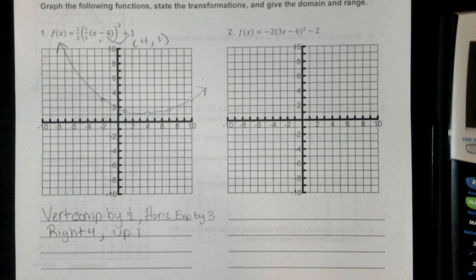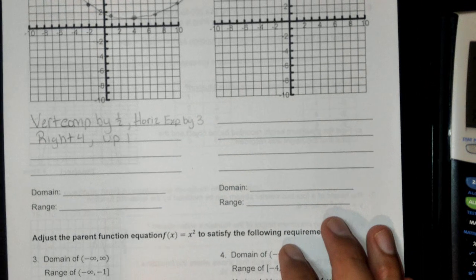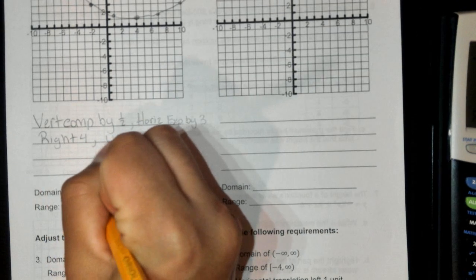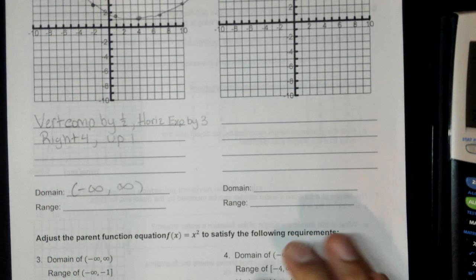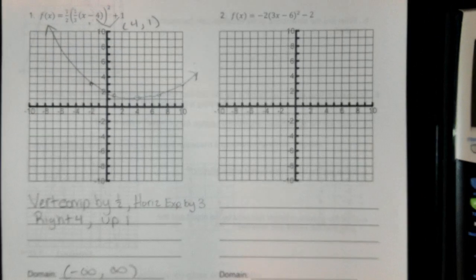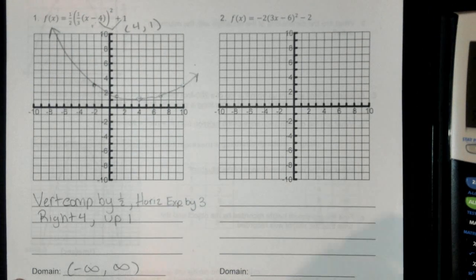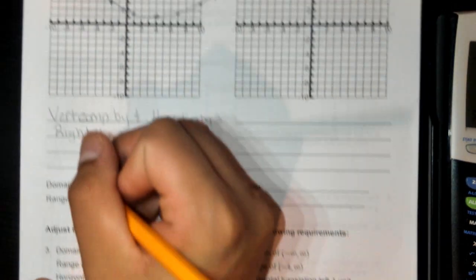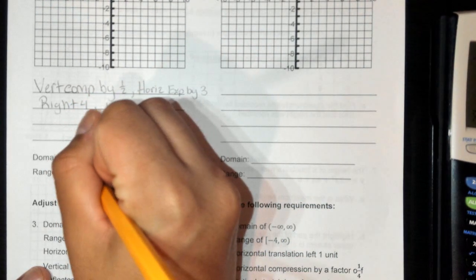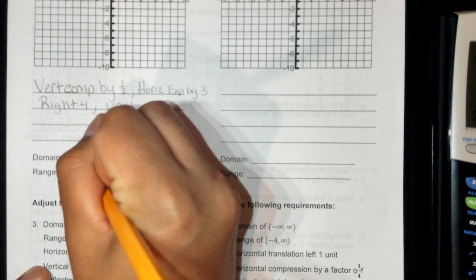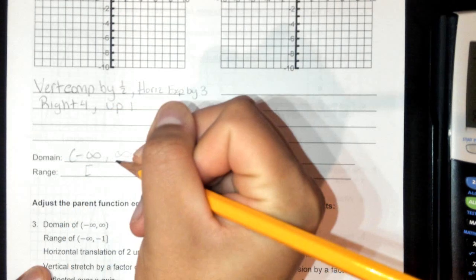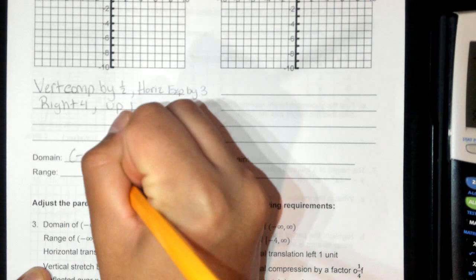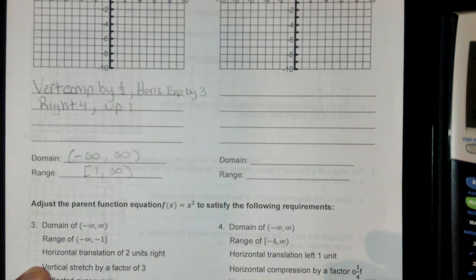For the domain, this is going to be from negative infinity to infinity. For the range — going bottom up — we start at 1 and it keeps going up to infinity, so bracket 1 to infinity.